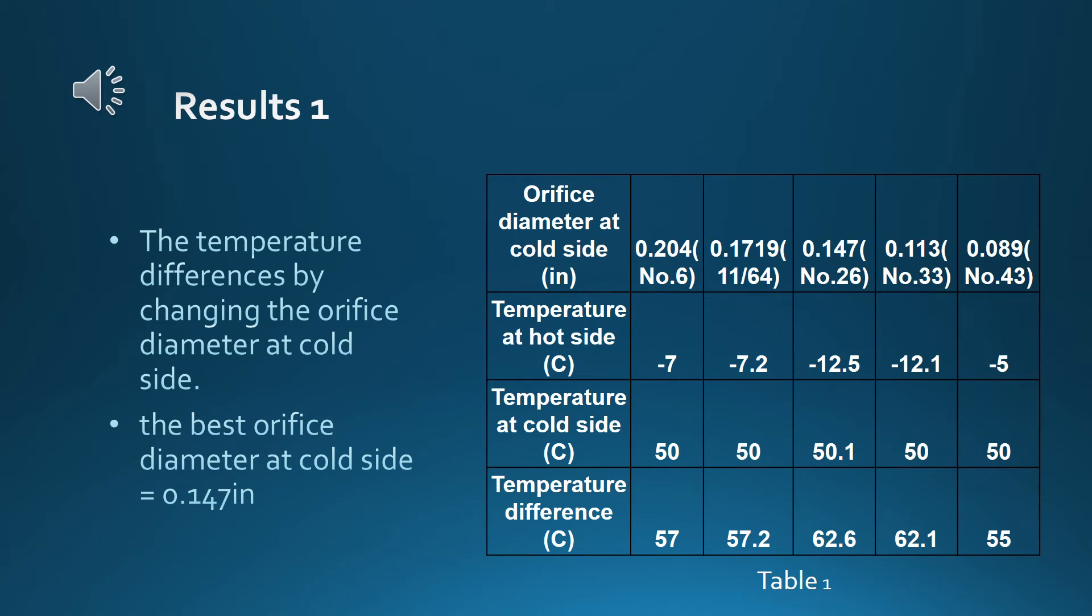It was supposed that as the orifice got smaller, the temperature difference increased. However, 0.147 inch was the best in this test. The reason why 0.113 and 0.089 inch got smaller temperature differences was considered that the orifice size was too small for all cold air to come out.